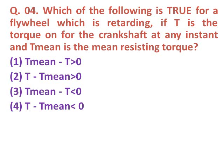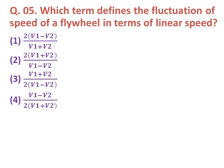Question four: Which of the following is true for a flywheel which is retarding? If T is the torque on the crankshaft at any instant and T_mean is the mean resisting torque, the correct answer is option four: T minus T_mean is less than zero.